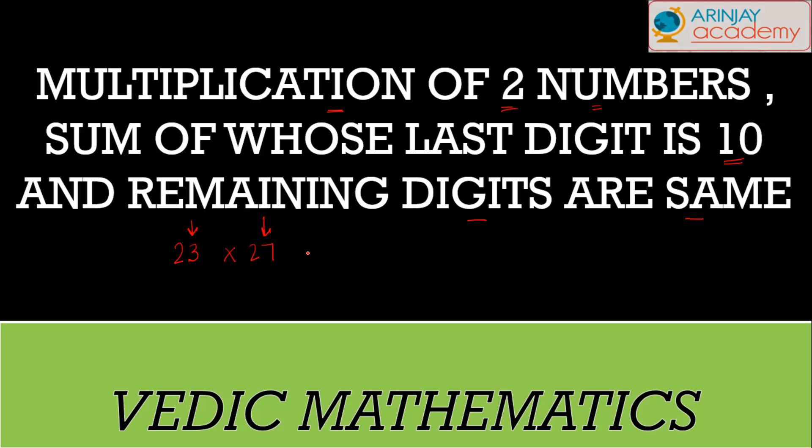And the remaining digits - in this the remaining digit is 2, in this the remaining digit is 2. The remaining digits of these two numbers are the same. So how do you calculate the product of these two numbers using Vedic mathematics in a quick manner is what we're going to look at in this video.